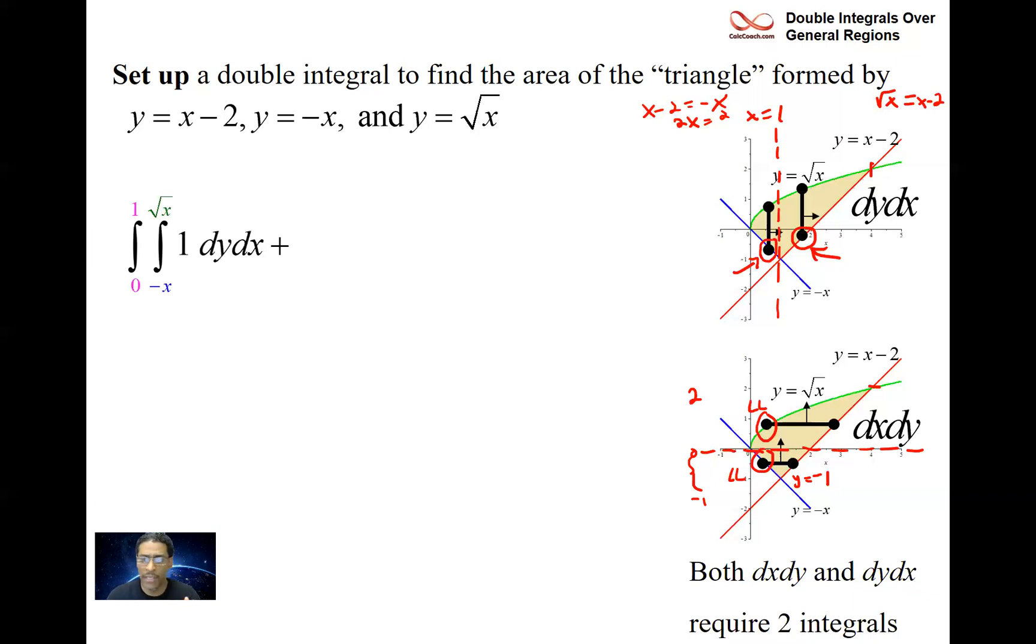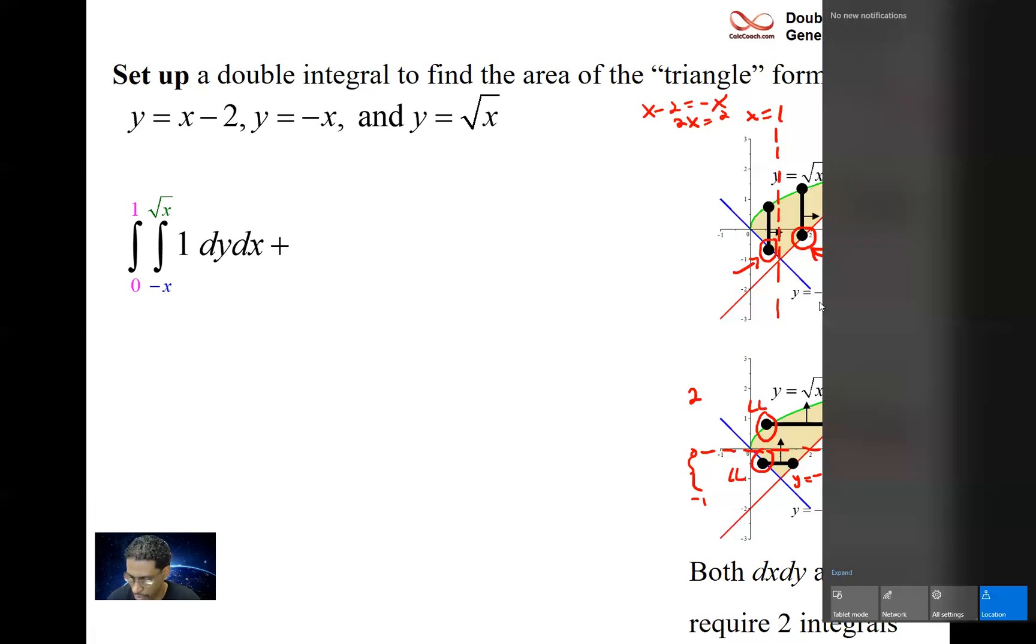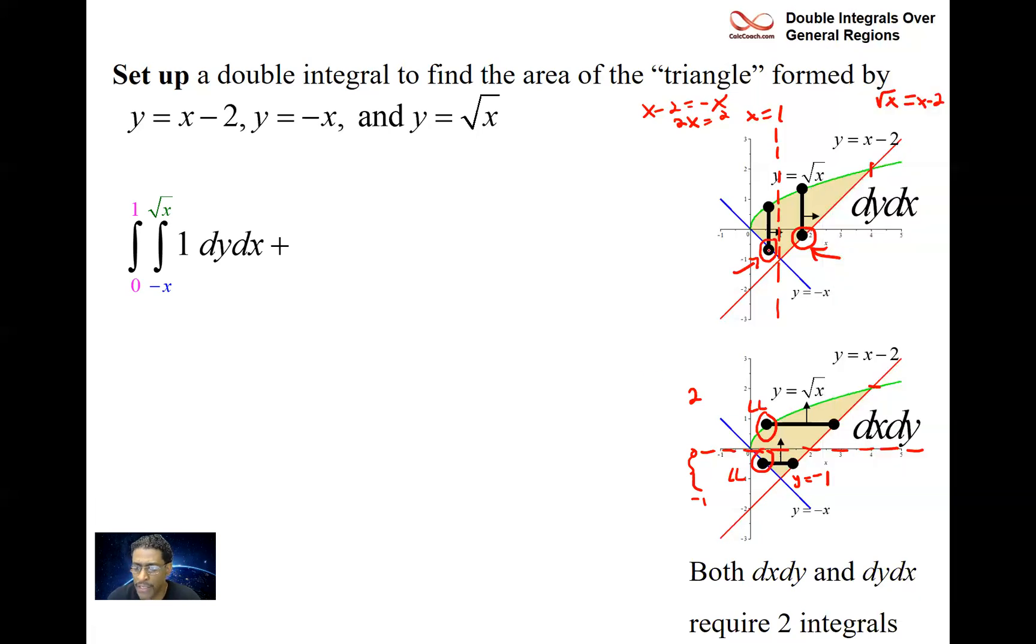So we're dealing with the left part here. The lower limit is the line y equals negative x inside. The upper limit is the root. I have them color coded here. And that's only between zero and one, because after one, all the way through four, you're going to have a different lower limit inside. The lower limit now switches to be the line x minus two. And the outer limits are now one to four. So that's the dy dx setup. Very doable integral there, both of the double integrals.